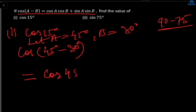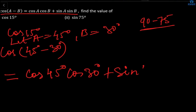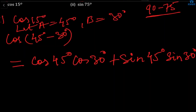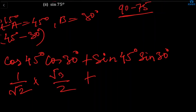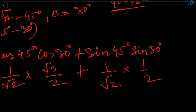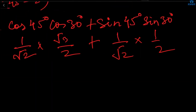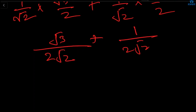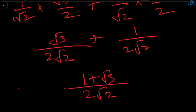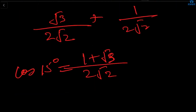Expanding using the given formula: cos 45° cos 30° plus sine 45° sine 30°. Cos 45° is 1/√2, cos 30° is √3/2, sine 45° is 1/√2, and sine 30° is 1/2. Multiplying and taking the LCM, we get (√3 + 1) over (2√2). So cos 15° equals (1 + √3) / (2√2).